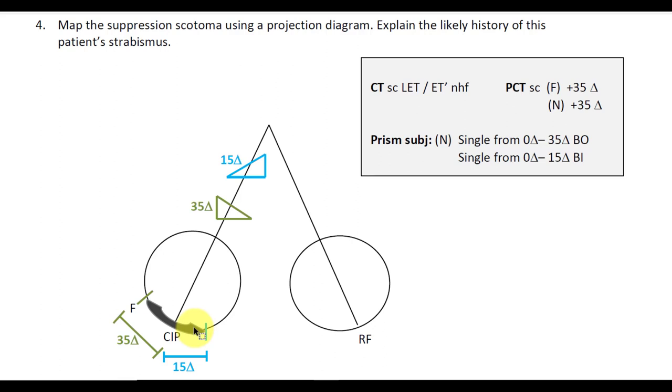How can you translate this into what the patient potentially used to have? Generally, suppression scotomas extend from fovea to CIP. Here, while the deviation is only 35 diopters, the suppression scotoma extends another 15 beyond the current CIP. This suggests this point must have been an old CIP, and we're now seeing a new CIP.